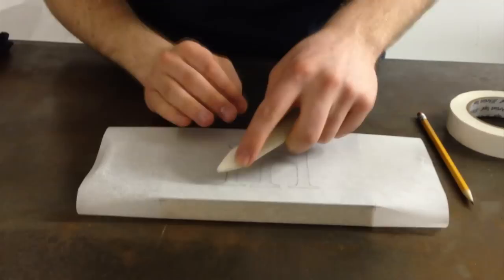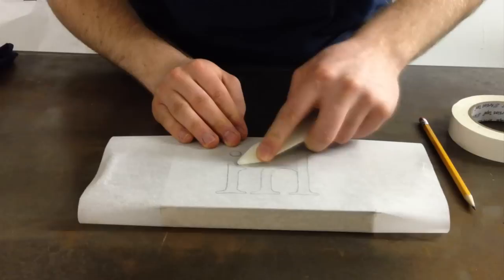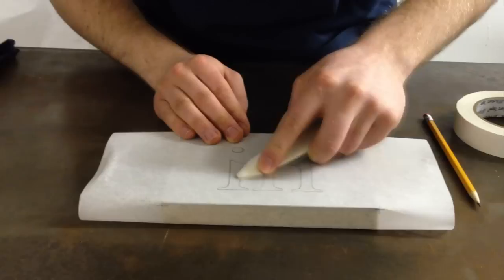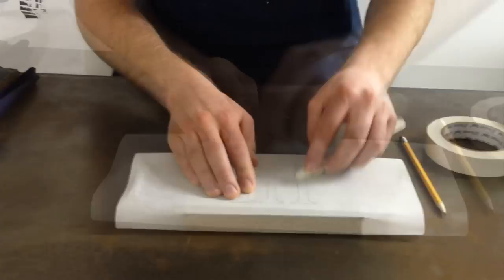I'll now use the bone folder and I'll just burnish it. And because the tracing paper, the nature of the tracing paper is that it smudges very easily, the graphite will now transfer directly to the block.